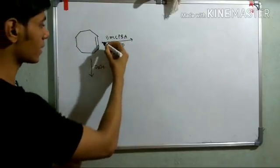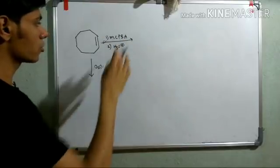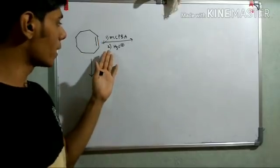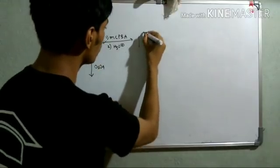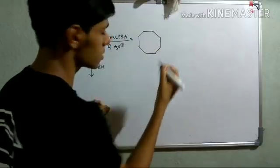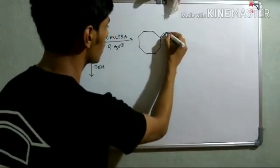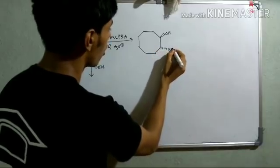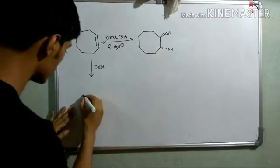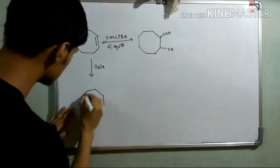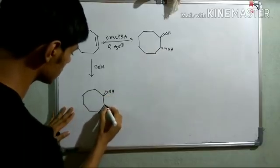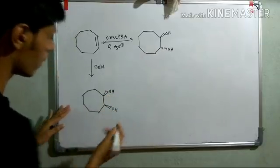In this case, the cyclooctene is reacted with these two conditions. First, it is reacted with meta-chloroperoxybenzoic acid, which will give epoxide and that epoxide is opened in acidic medium. So, you know, epoxide opening in acidic medium will give you the trans-diol. So, in this case, you will get this trans-diol. Whereas, if you do the same reaction with osmium tetroxide, you will get cis-diol directly from this octene. So, in this case, you will get this cis-diol.